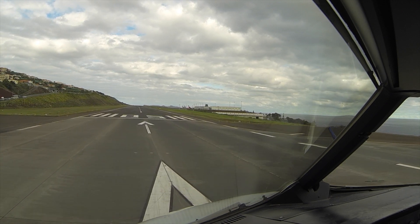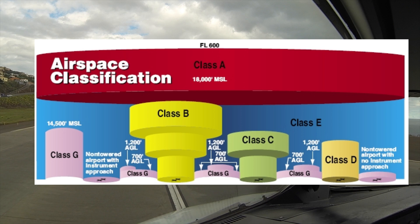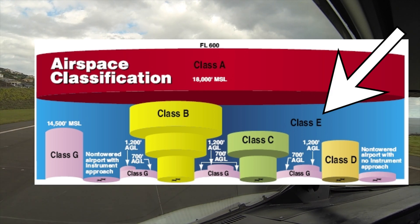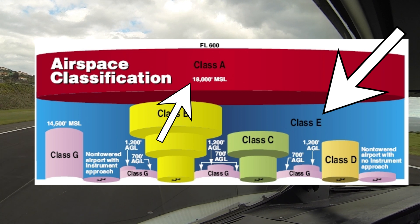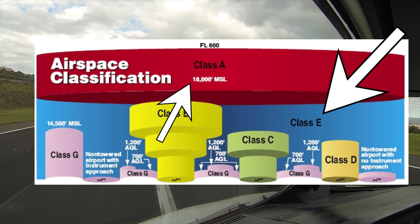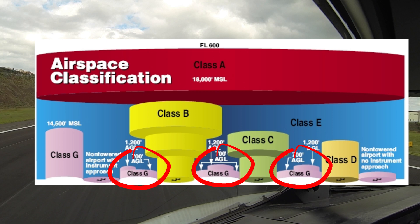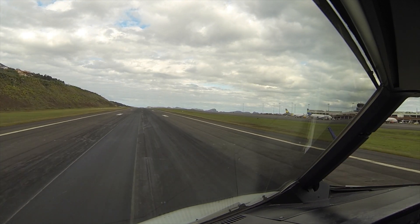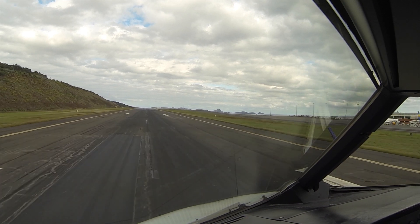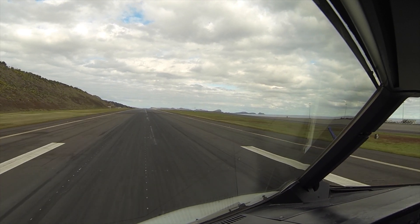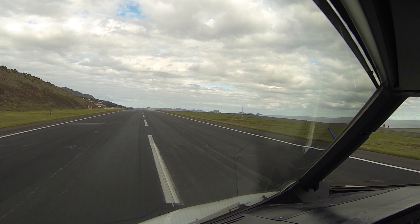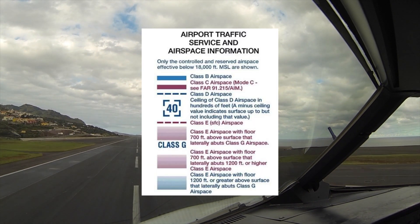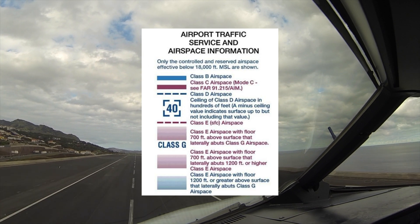You can think of class echo airspace as being almost everywhere, extending from the surface or a designated altitude all the way up to but not including 18,000 feet. In some areas class echo starts lower, like 700 feet or even right at the surface. It's all about protecting the airspace and ensuring safe operation. We'll take a closer look at the sectional chart legend to identify these areas, like the magenta shading and dashed magenta lines, and explain why these exceptions exist.